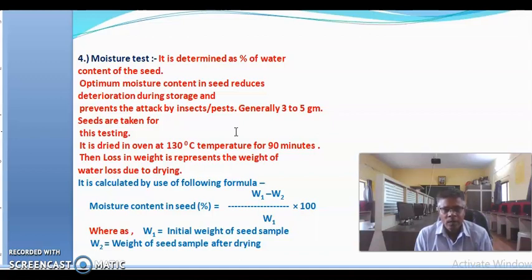Seeds are dried in an oven at 130 degrees Celsius temperature for 90 minutes. The loss in weight is represented by the weight of water loss which is due to drying. This moisture content in seed is also calculated by the use of following formula: moisture content in seed equals W1 minus W2 divided by W1, and it is multiplied by 100.